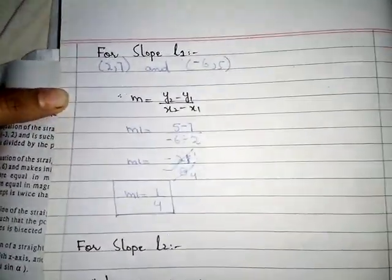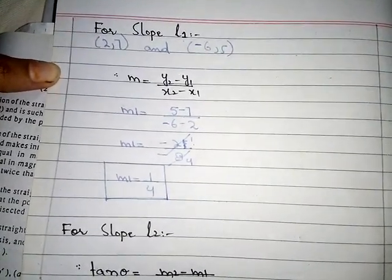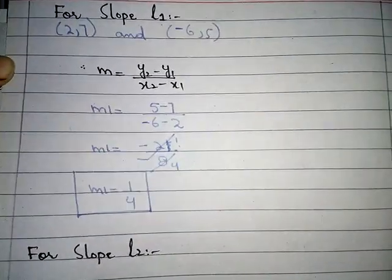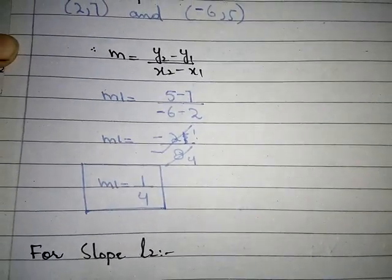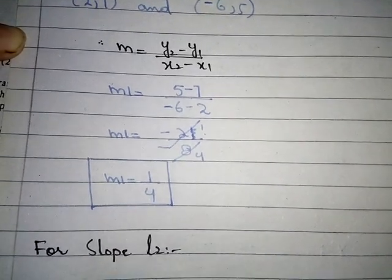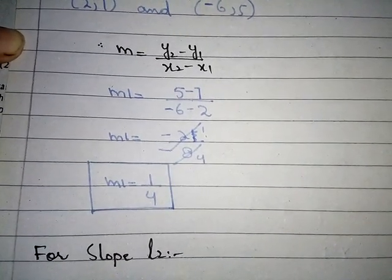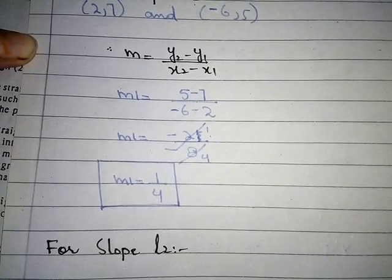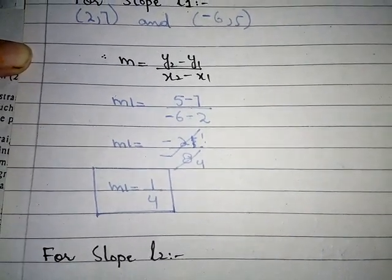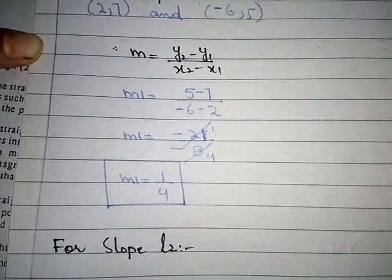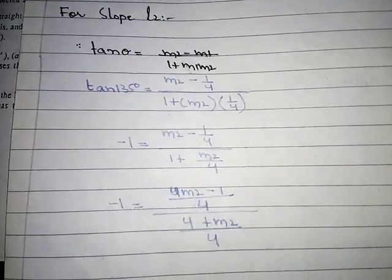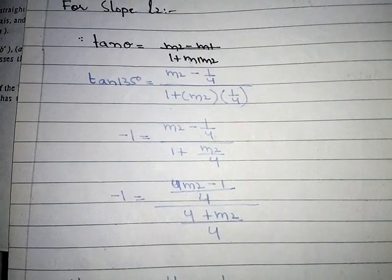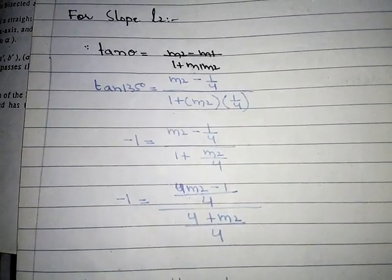Firstly, find slope of L1 through (2, 7) and (-6, 5). Using slope formula m = (y2 - y1)/(x2 - x1): m1 = (5 - 7)/(-6 - 2) = -2/(-8) = 1/4. The answer is 1/4. Now for slope of L2, we use the angle formula since the angle is given.